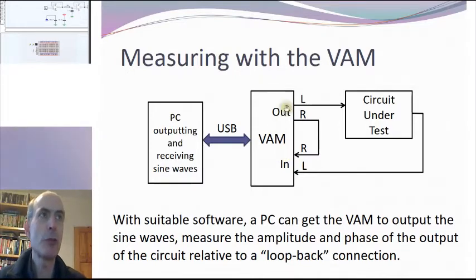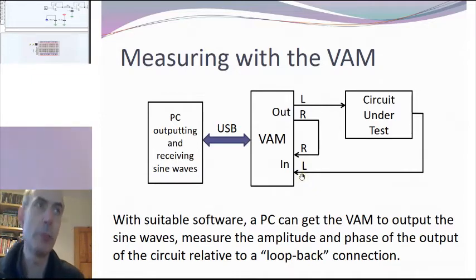And loops back the right output from the VAM back into the right input. Since we're sending out the same signal from the left and the right stereo channels, what we read in from the right channel is the input to the circuit under test, and from the left channel is the output from the circuit under test. So just by looking at the difference between the right and left stereo channels we can determine the frequency response of the circuit under test.